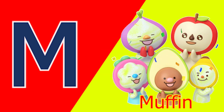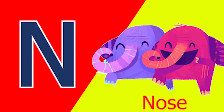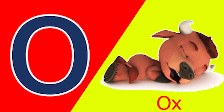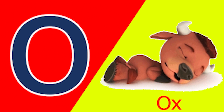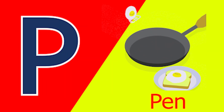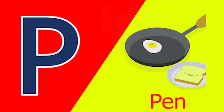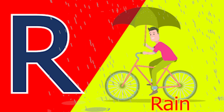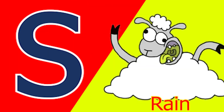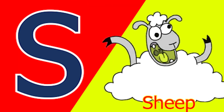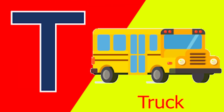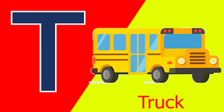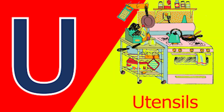M for mud, N for nose, O for ox and P for pan, Q for quack and R for rain, S for sheep and T for tub, U for utensil.